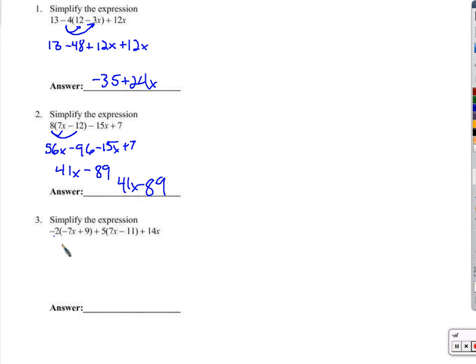Negative 2. See in this problem we have the distribution of negative 2 and we have the distribution of positive 5 into these parentheses. So negative 2 times negative 7x is 14x. Remember negative times negative is positive. Negative 2 times 9 is negative 18. 5 times 7x now we have 35x. 5 times negative 11 is negative 55. And plus 14x.